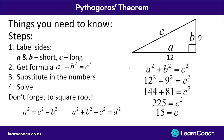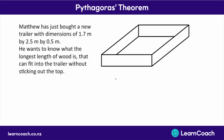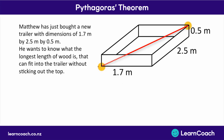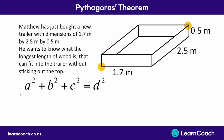Now we're going to look at two problems. The first one's going to be a 3D problem, then we'll look at a two-dimensional problem. Matthew's just bought a new trailer with dimensions of 1.7 metres by 2.5 metres by 0.5 metres. Matthew wants to know the longest length of wood that can fit into the trailer without sticking out the top — that's going to be a diagonal piece. This is a three-dimensional problem, so we must use our 3D Pythagoras formula: a squared plus b squared plus c squared equals d squared.